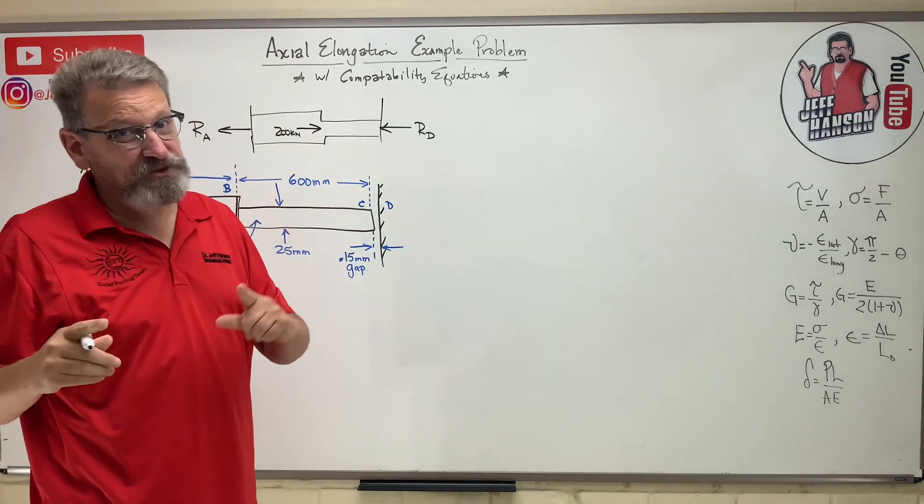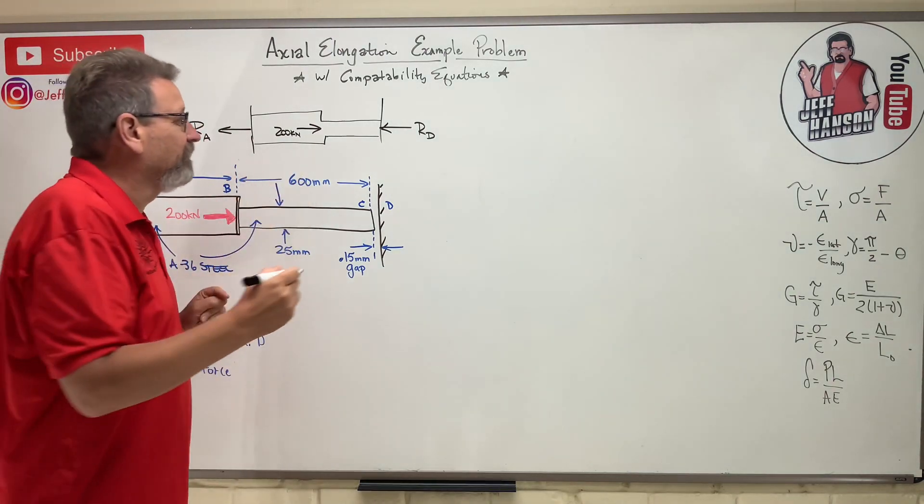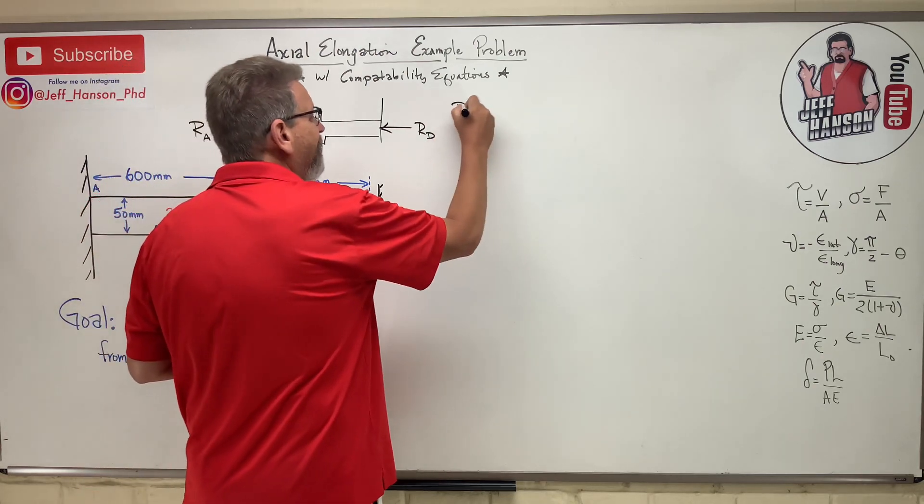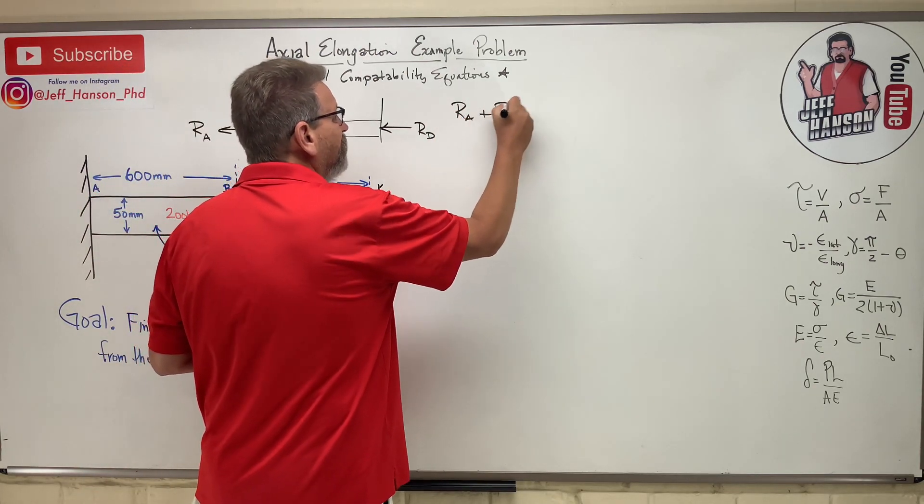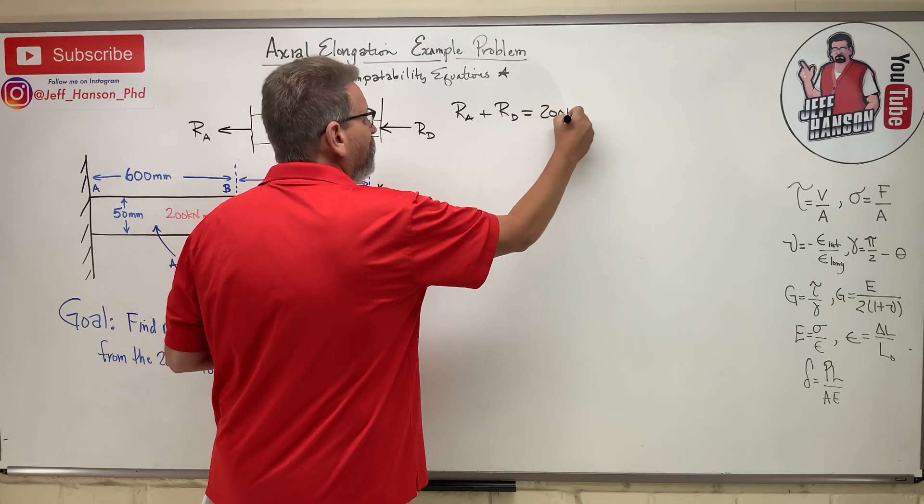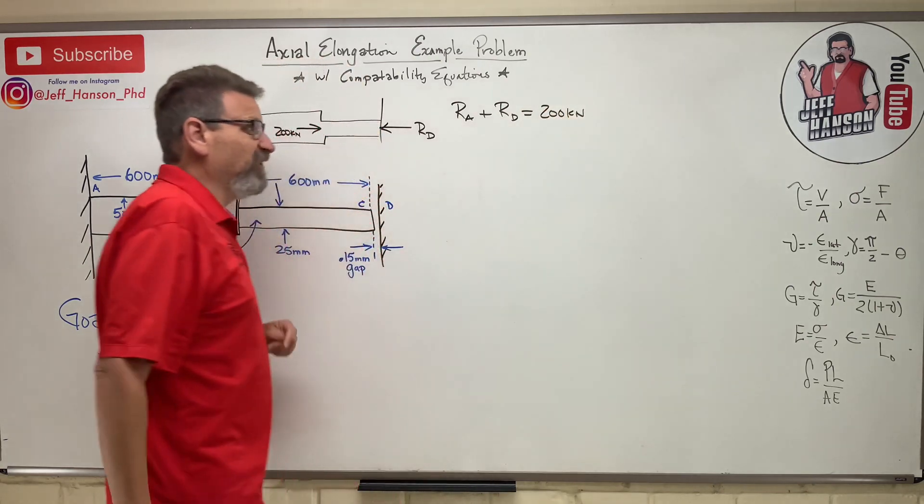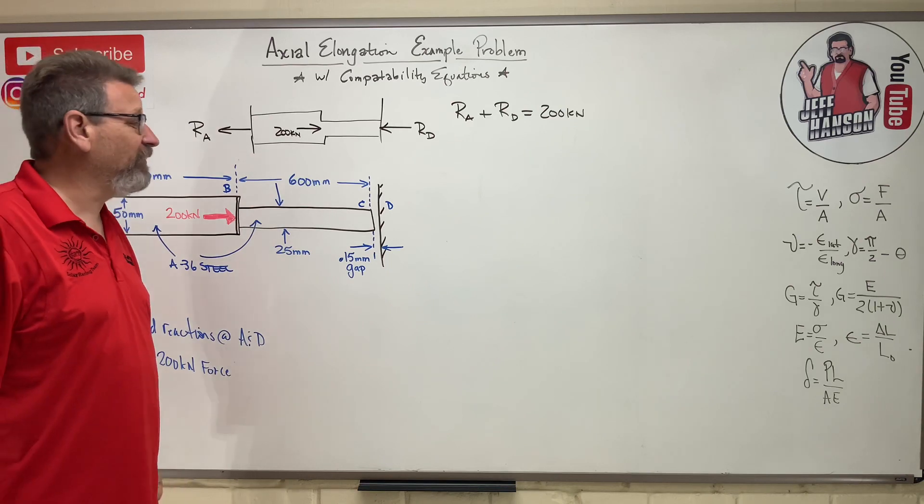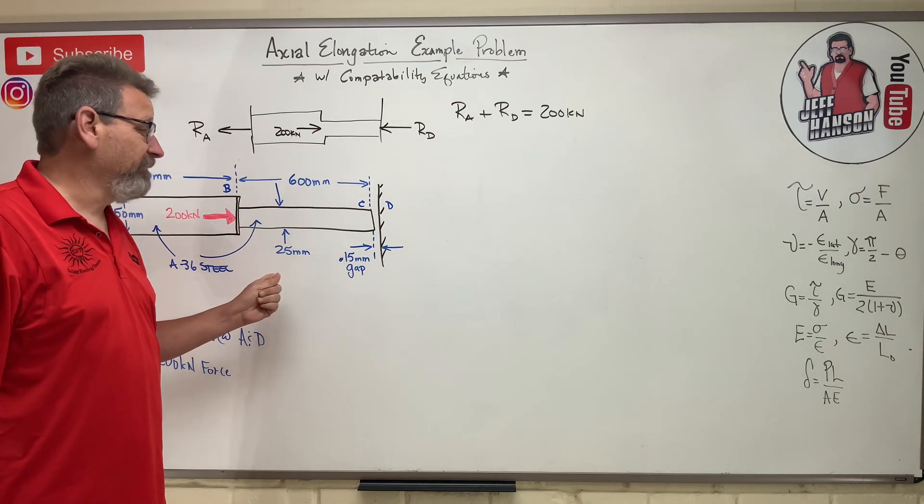So there's our first compatibility equation, and it comes from statics, doesn't it? So Ra plus Rd is equal to 200 kilonewtons. So that's a biggie right there. That's our compatibility equation that we're going to need to solve this.